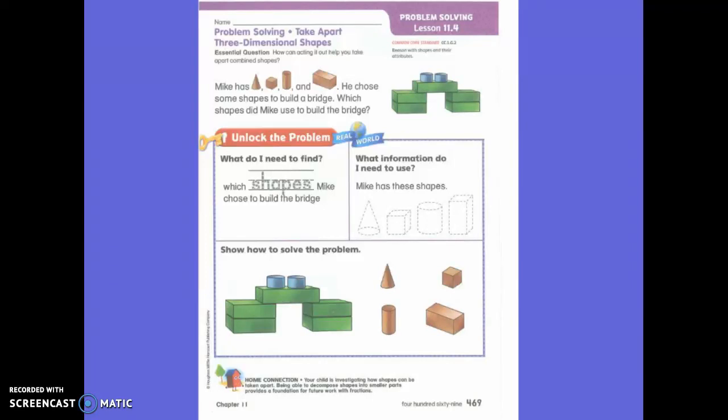Mike has a cone, a cube, a cylinder, and a rectangular window.